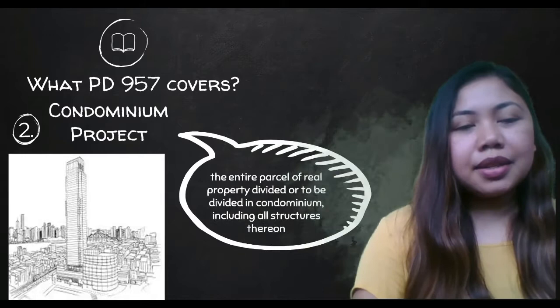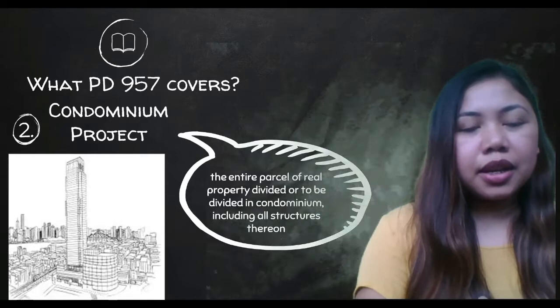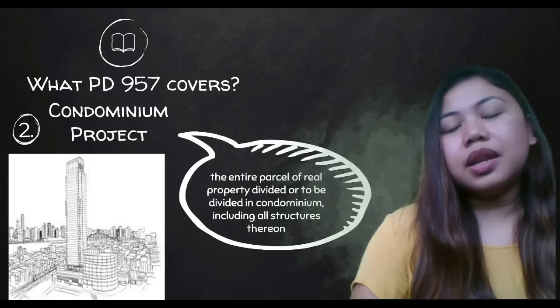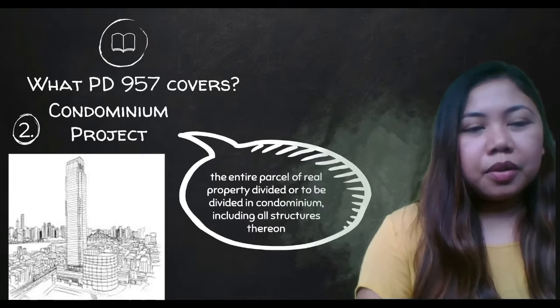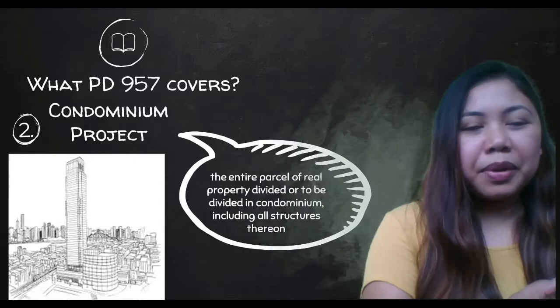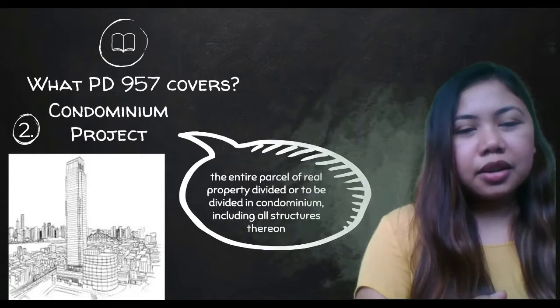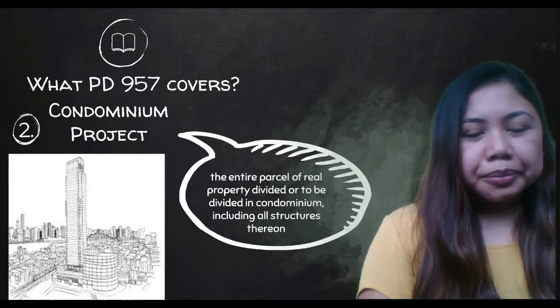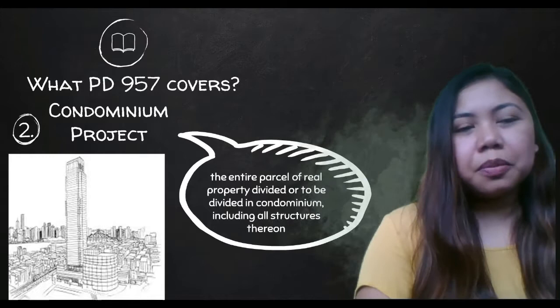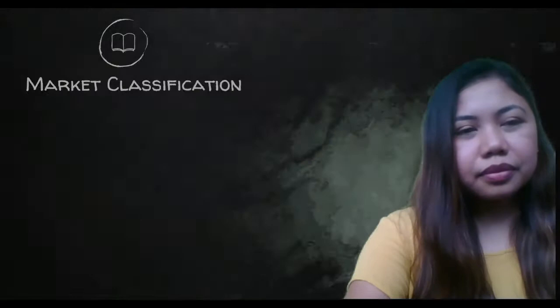It's treated like a subdivision — the title that you get from that ownership can be used as collateral in a bank. In a condominium, you own only the airspace — your part of the building — compared to a subdivision where the buyer owns the land. So condominium is a vertical development, while subdivision is a horizontal development.